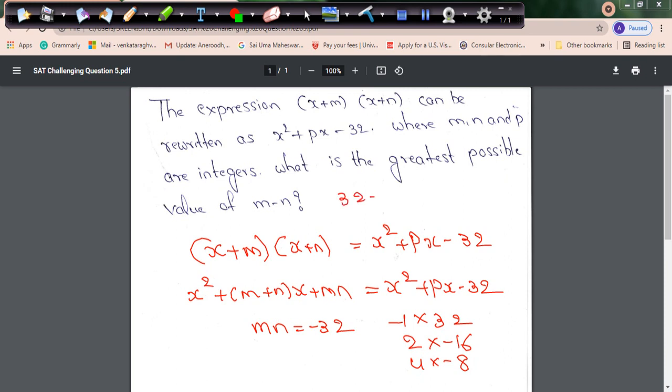32 minus of minus 1 is 33. This is the greatest possible value when M and N are integers. If not, you get other options: 18 or 12 from 4 minus of minus 8, but I want the greatest possible value, so the answer is 33.